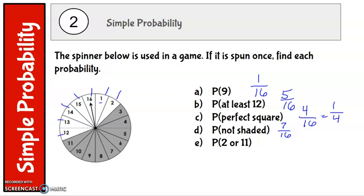And then our last probability of simple probability is 2 or 11. So there is 1 space that is 2, and there is 1 space that is 11. So there are 2 favorable spaces out of 16, which reduces to 1 eighth.